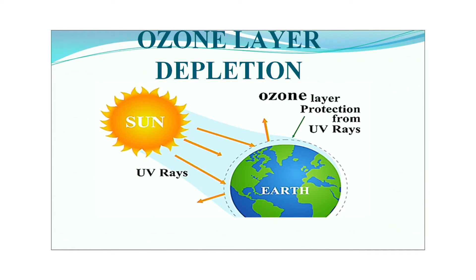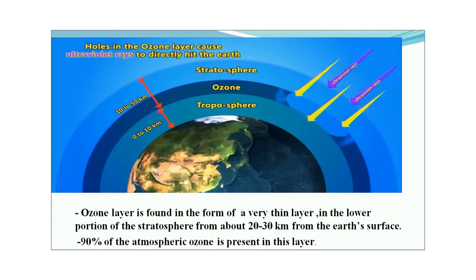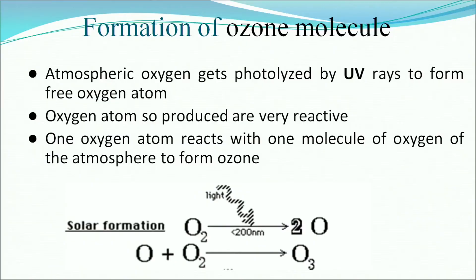Our next topic is ozone layer depletion. UV radiation from the sun is protected by the ozone layer — it is a natural shield. The ozone layer is found as a very thin layer in the lower portion of the stratosphere, from about 20 to 30 kilometers from the Earth's surface, where 90 percent of atmospheric ozone is present. Ozone is naturally both formed and destroyed in our atmosphere.